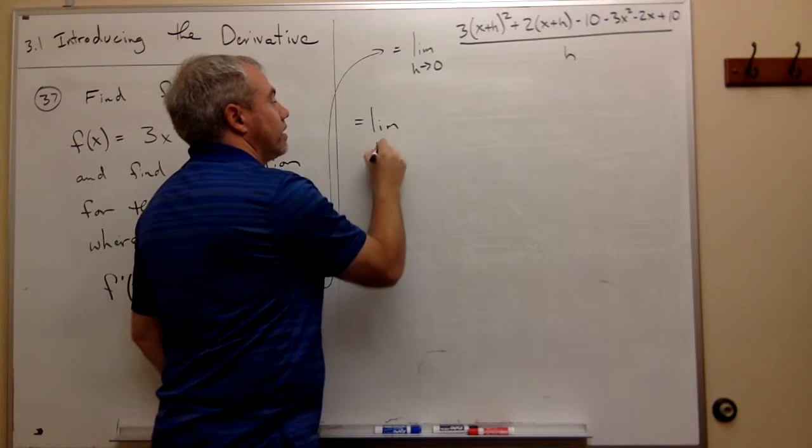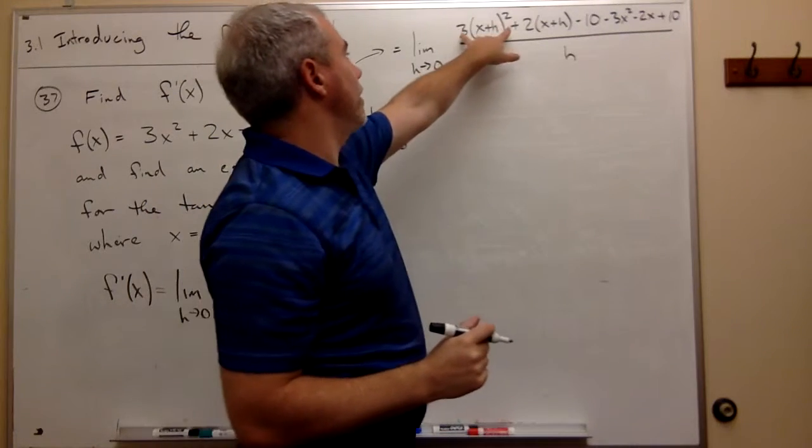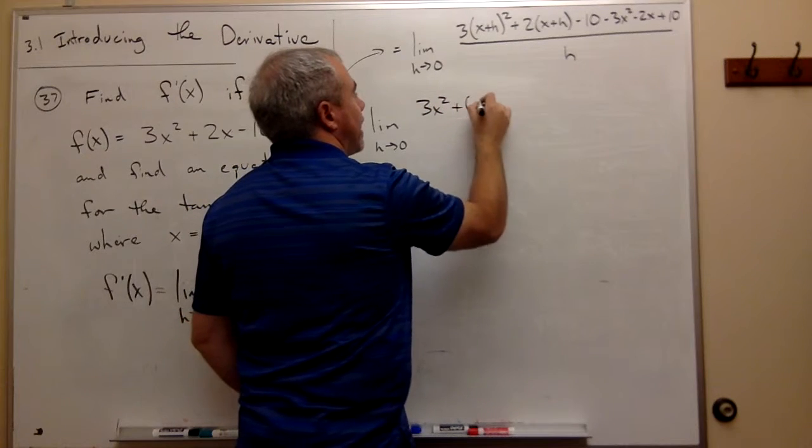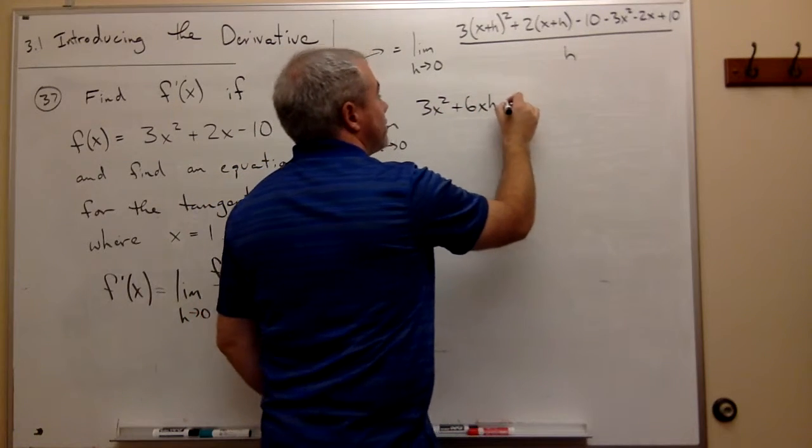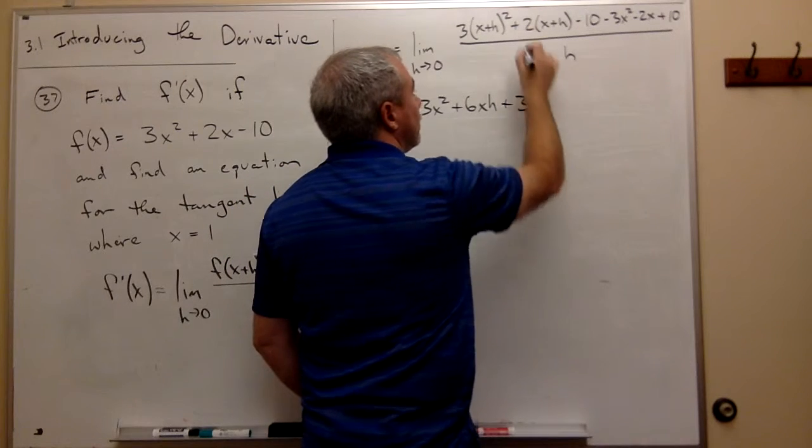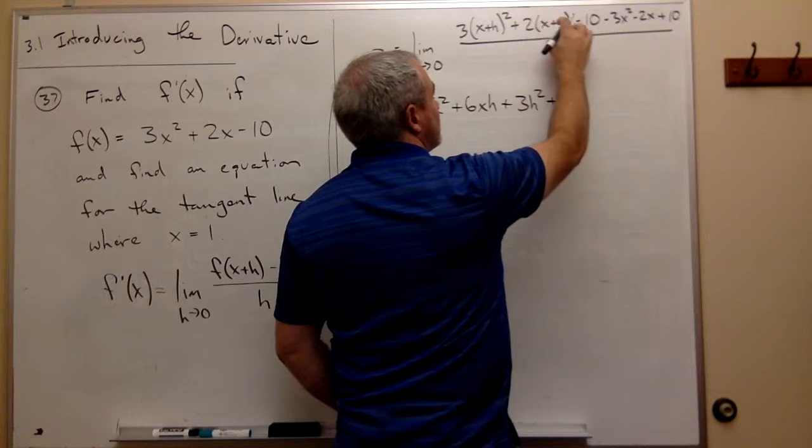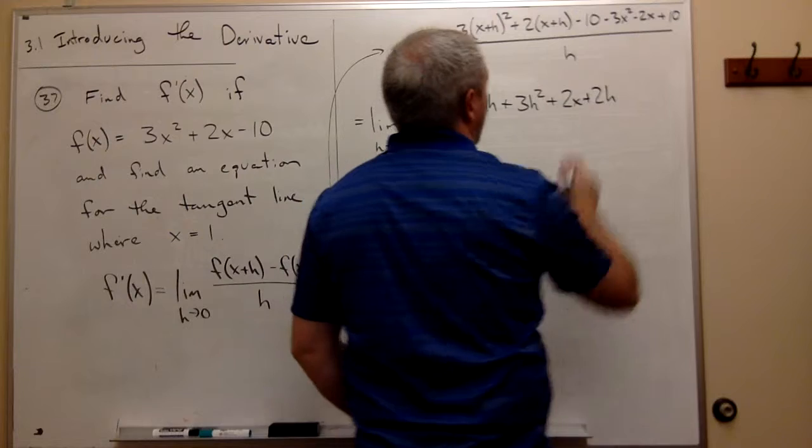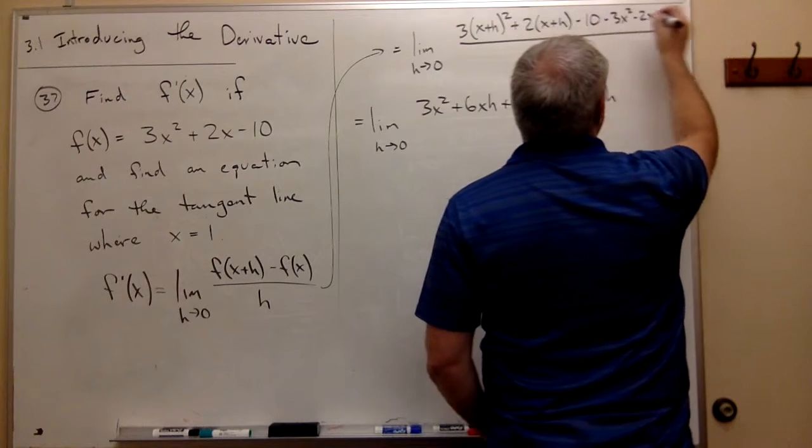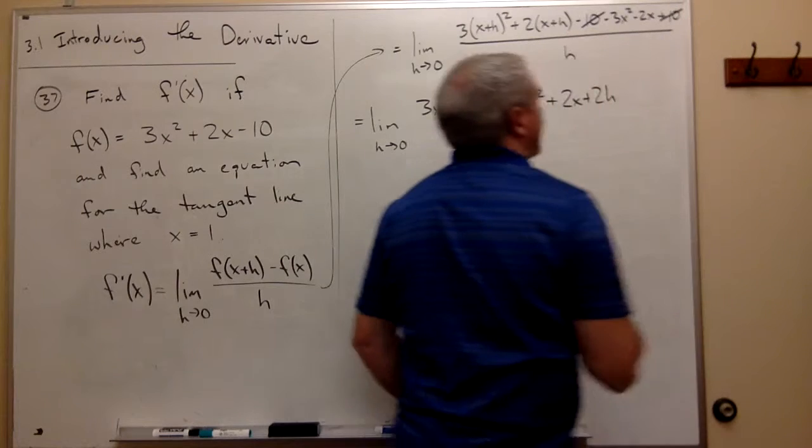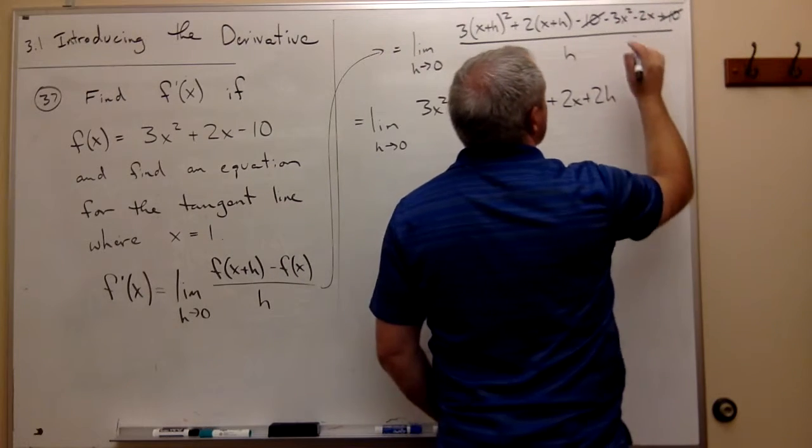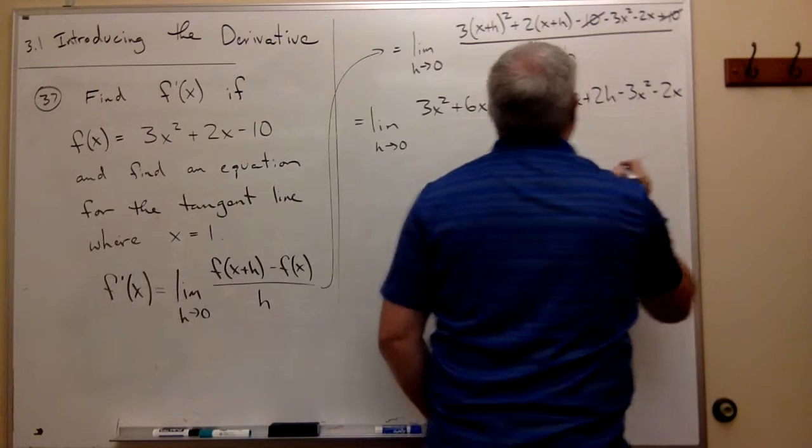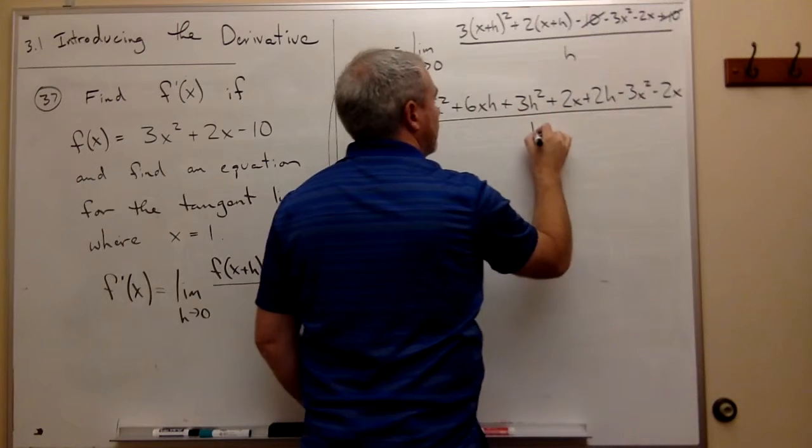This is the limit as h goes to 0. If I square this first one out, I get 3x² + 6xh + 3h², then plus 2x + 2h - 10. Notice I have a -10 and a +10 on top, so let's cancel those. Then what's left is minus 3x² - 2x all divided by h.